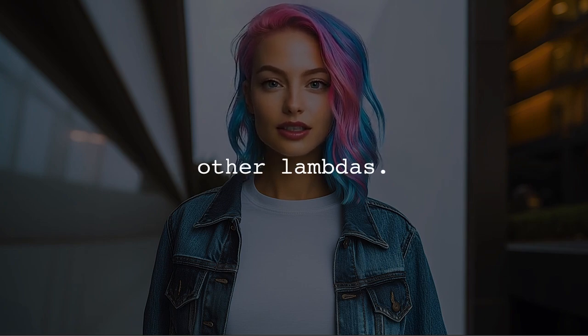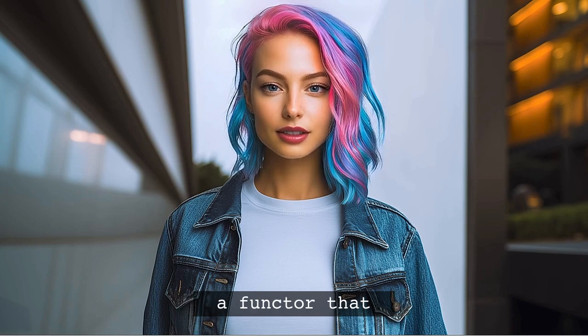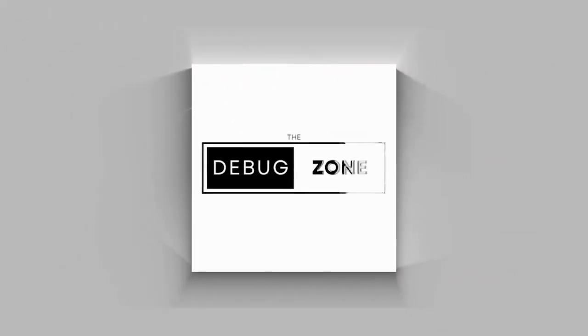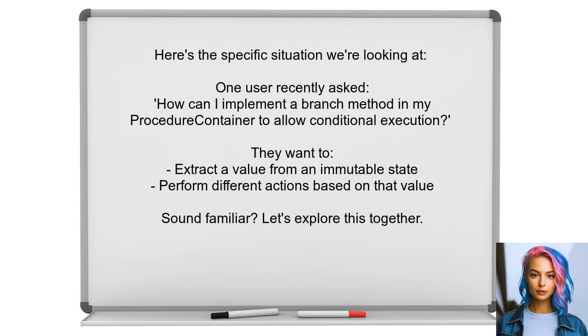I totally get it. Trying to create a functor that allows for branching can feel overwhelming. You're not alone in this struggle — many developers face similar challenges when experimenting with functional programming concepts. One user recently asked: how can I implement a branch method in my procedure container to allow conditional execution? They want to extract a value from an immutable state and perform different actions based on that value. Sound familiar? Let's explore this together.